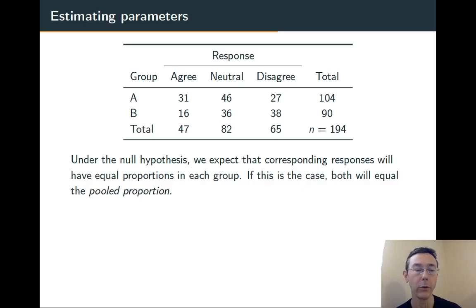So how are we going to do it? Well, under the null hypothesis, we expect that corresponding respondents are going to have equal proportions in each group. The same proportion in group A and group B is going to agree, the same proportion is going to be neutral, the same proportion is going to disagree. And if those proportions are the same, they'll also be the same as the pooled proportions.